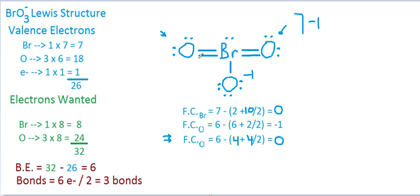We did minimize formal charges. Are the octets filled for oxygens? Yes — the double-bonded oxygen has four non-bonding plus four bonding electrons equaling eight, and the single-bonded oxygen has six non-bonding plus two bonding electrons equaling eight. Bromine has an expanded valence shell with more than eight electrons, but that's fine because it's a fourth-row element — third row or lower can have expanded valence. Double-checking electron count: 16 non-bonding plus 10 bonding equals 26 total, which is what we started with.